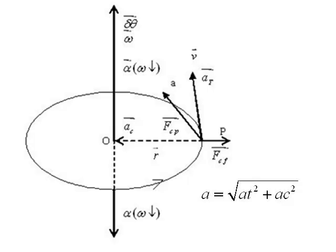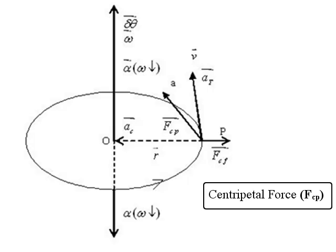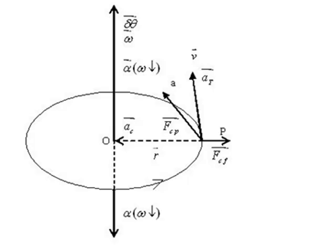Whenever there is an acceleration, there will be a force acting on the body, because acceleration is the result and force is the cause. As a body in UCM is always acted upon by centripetal acceleration, there must be a force acting on the body causing this acceleration. This force is called centripetal force, denoted by FCP. The force has the same direction as that of the acceleration. If the centripetal acceleration is along the radius towards the center, then FCP, the centripetal force, is also shown in the figure in that direction.